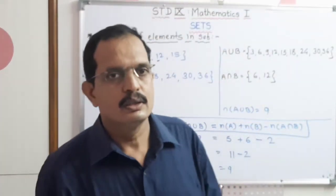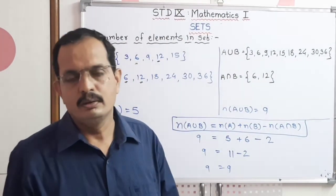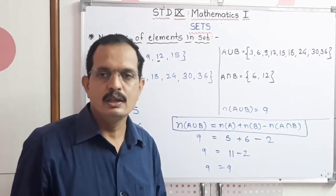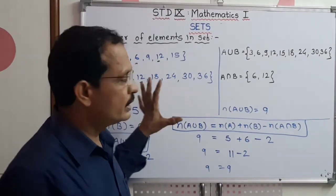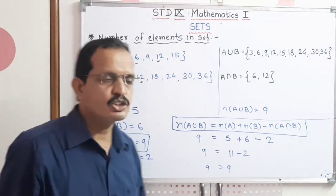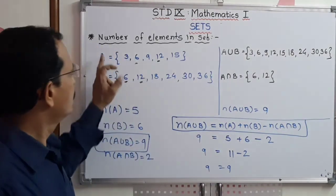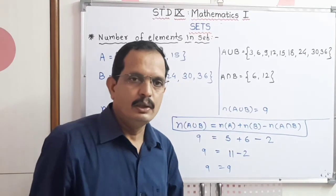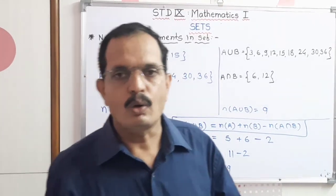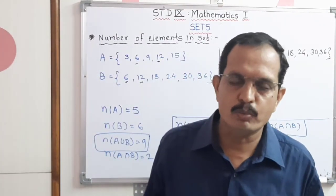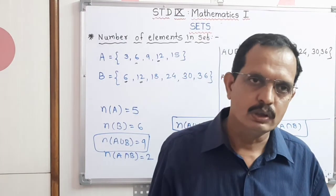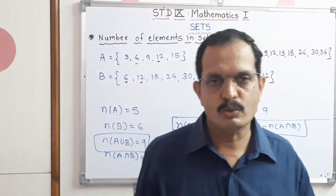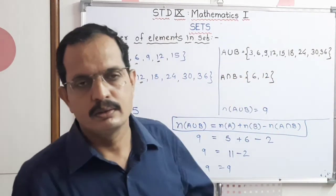Dear students, till now we learned intersection of two sets, union of two sets, disjoint sets, and the relation between the number of elements in a set. Write down all the definitions and properties in your notebook. In the next lecture, we will learn questions based upon this. Thank you.